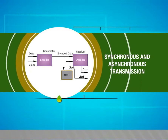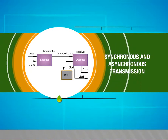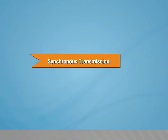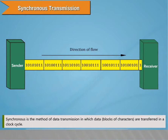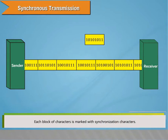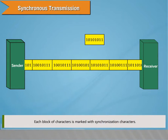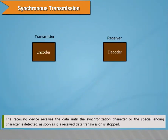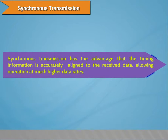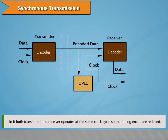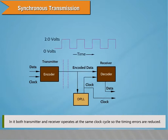Synchronous and Asynchronous Transmission. Synchronous transmission is the method of data transmission in which data (blocks of characters) are transferred in a clock cycle. Each block of characters is marked with synchronization characters. The receiving device receives data until the synchronization character or special ending character is detected, at which point data transmission is stopped. Both transmitter and receiver operate at the same clock cycle, so timing errors are reduced.